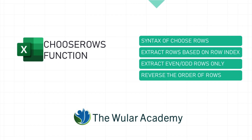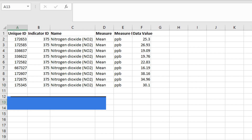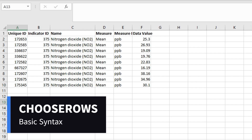Then we will look at how we can use the CHOOSEROWS function to extract rows based on the row index number. Then we will learn how we can extract even rows only or odd rows only using the CHOOSEROWS function, and finally we will see how we can use it to reverse or flip the order of the rows.